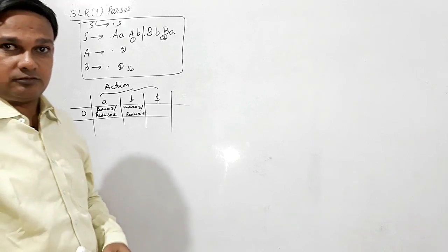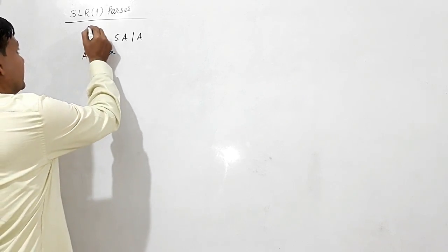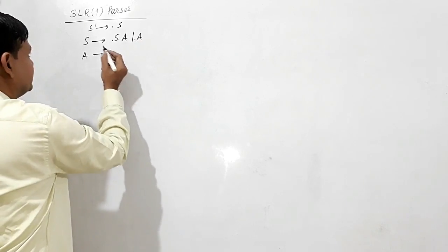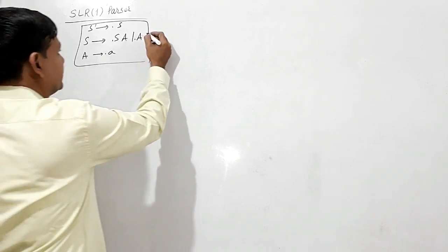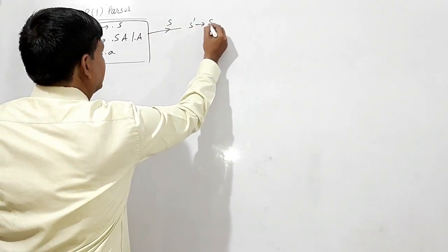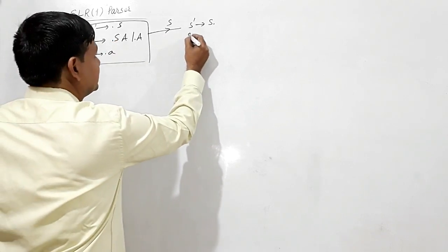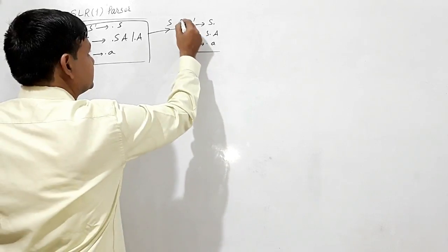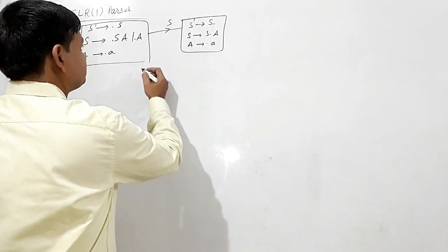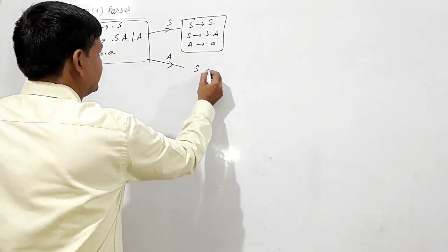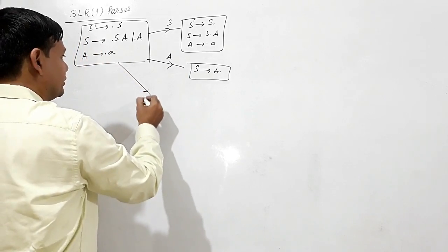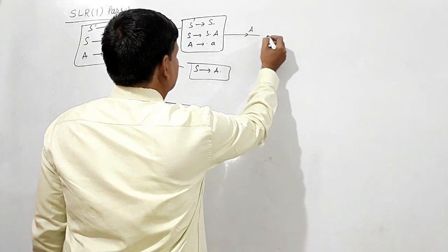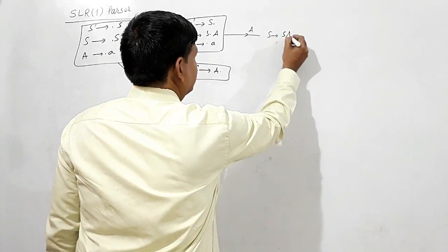For the next example, using augmented production S' → .S. S is giving .SA or .A. Closure of A is giving .a. If I read S, S' will give me S dot A and S will give me S dot A. I have to write the closure of A: A will give me .a. If I read S, S will give me S dot A. If I read small a, it will give me A dot.